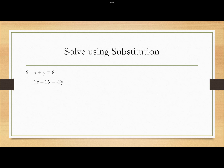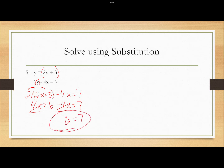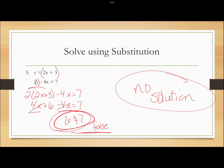Solve using substitution again. y equals 2x plus 3, so y is already solved for. Substitute it into the second equation: 2 times (2x plus 3) minus 4x equals 7. Distribute: 4x plus 6 minus 4x equals 7. Combine like terms: 4x minus 4x goes away, leaving 6 equals 7. Is that true? No — 6 does not equal 7. That is a false statement. Whenever you get a false statement, your answer is no solution. That means the lines are parallel and will never intersect.